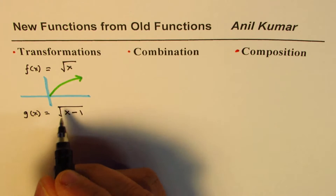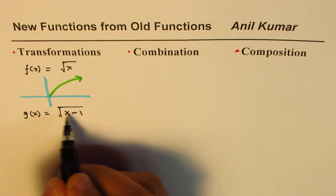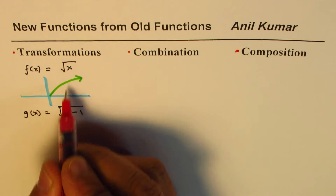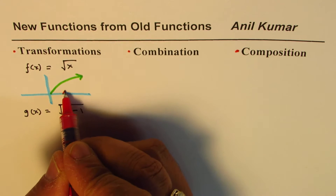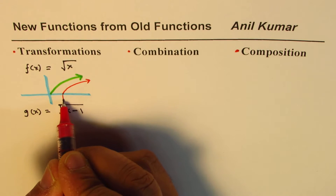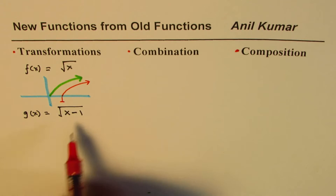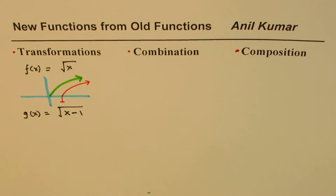So the function is transformed one unit to the right, shifted to where x equals one. That becomes g of x. You can see they are very similar but they are different functions. So you could create a new function from the old one by transformation.